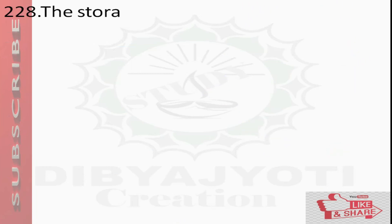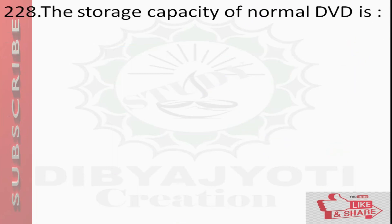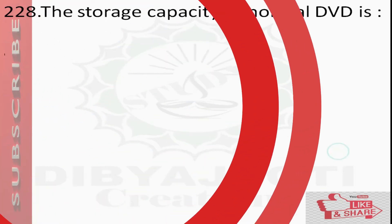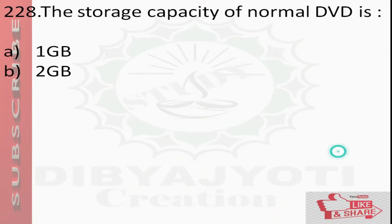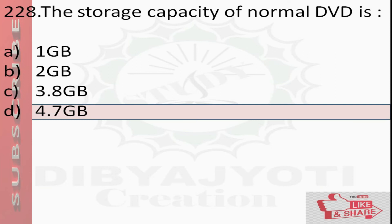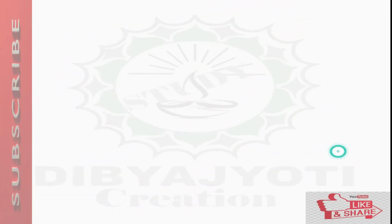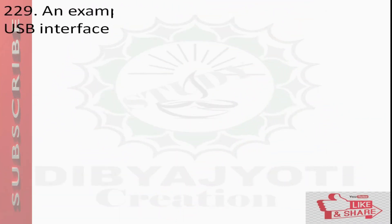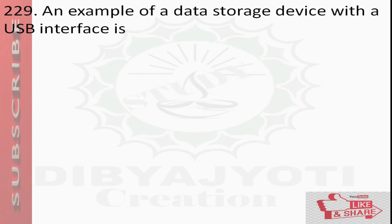Question number 228: The storage capacity of a normal DVD is — option A 1 GB, option B 2 GB, option C 3.8 GB, option D 4.7 GB. Answer is option D, 4.7 GB.